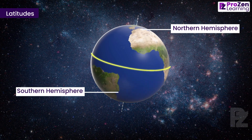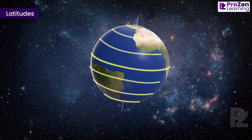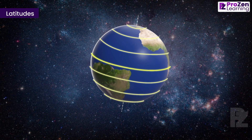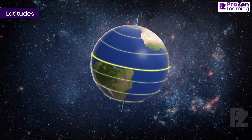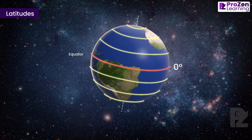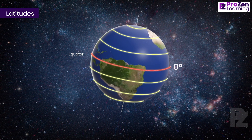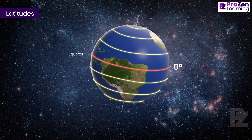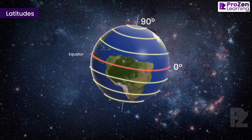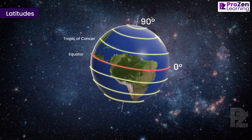Parallels of latitudes are imaginary circles that run parallel to the equator, extending from the equator up to the poles. These parallels are measured in degrees. The equator itself represents zero degrees latitude. The distance from the equator to either of the poles is one fourth of a circle around the Earth, which measures 90 degrees.